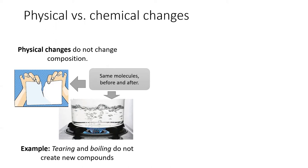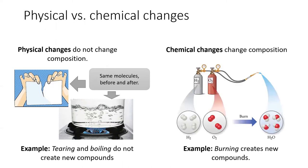Unlike physical changes, chemical changes create new compounds. For example, when we combine hydrogen and oxygen gas at high heat, they undergo a chemical reaction, and a new compound is formed. In order to reverse a chemical change, we need to apply another chemical change.